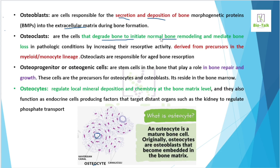Bone resorption is a pathological condition involving osteoclasts, which are derived from the monocyte lineage. They come from a precursor cell type. Osteoprogenitor cells, also called osteogenic cells, are stem-cell-like cells important in bone repair and bone growth. They are derived from stem cells and give rise to osteocytes and osteoblasts.